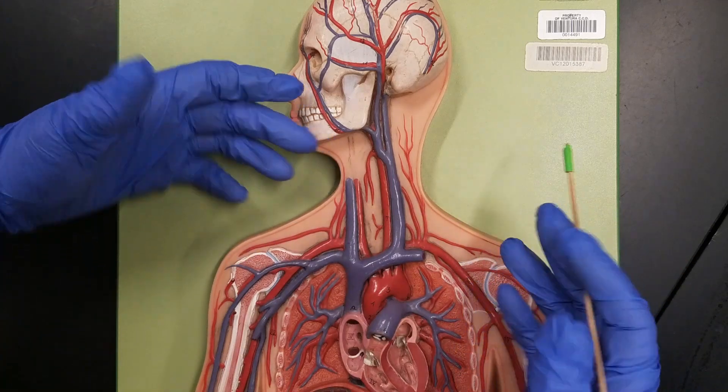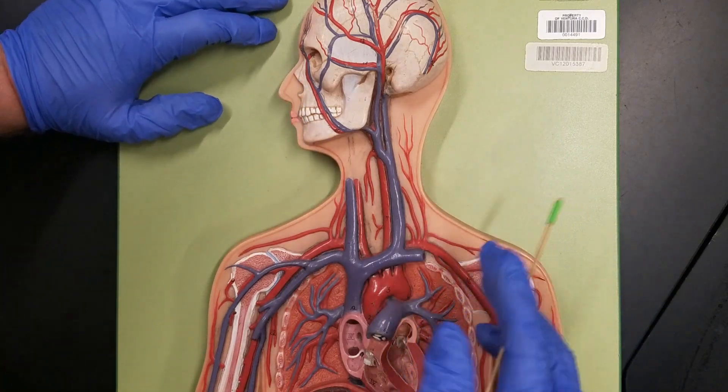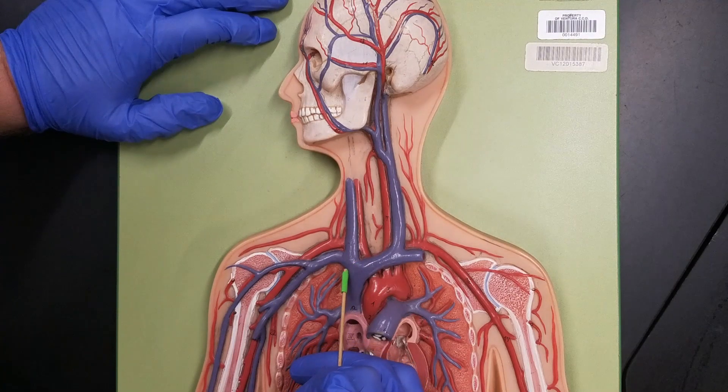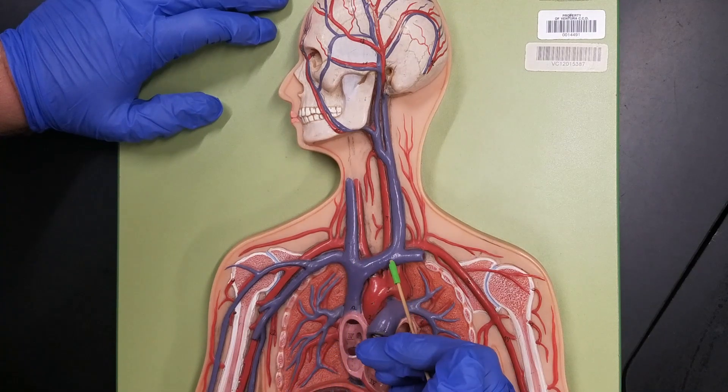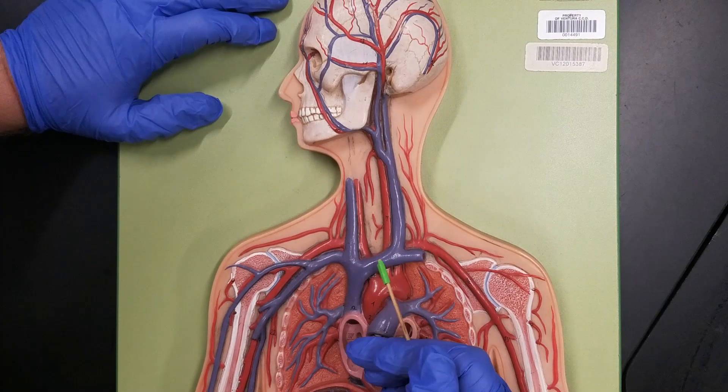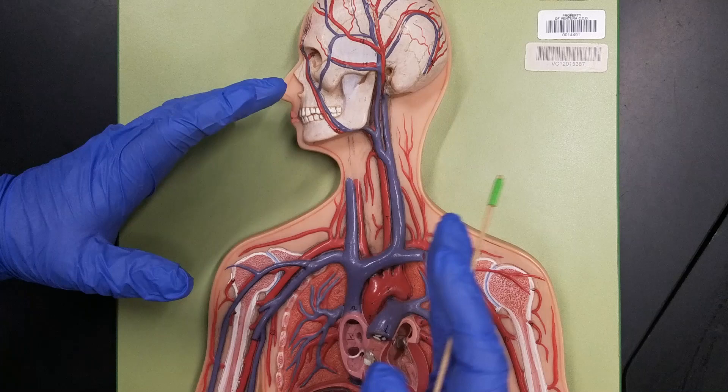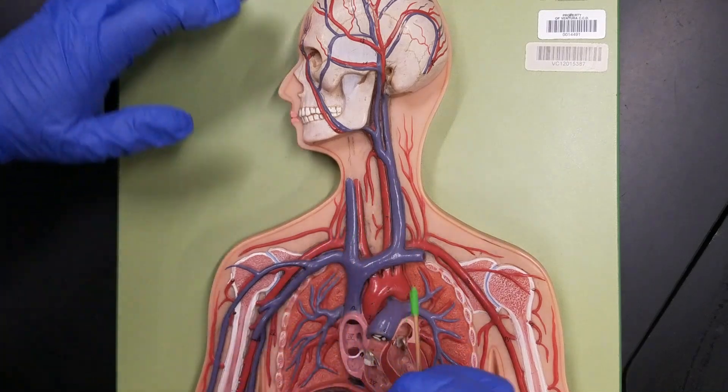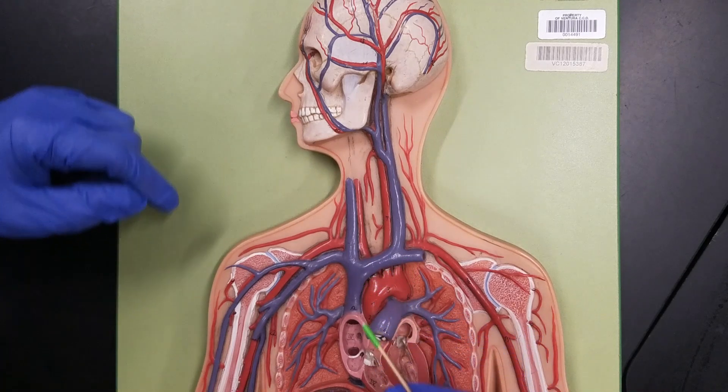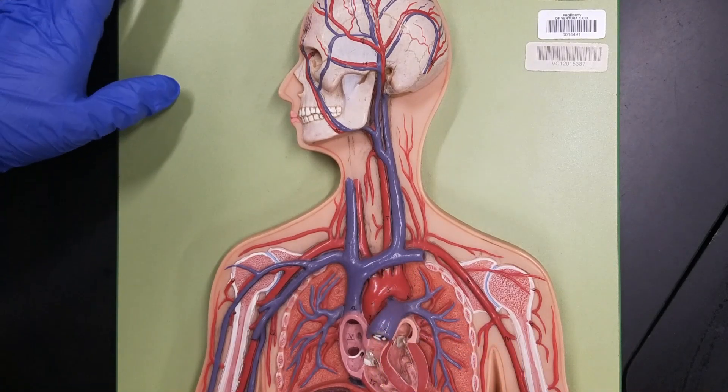One difference we can see between the left and right sides of the body is my right brachiocephalic vein is incredibly short, while the left brachiocephalic vein is a lot longer. Remember, these veins are draining blood back to the right side of the heart. That means our left brachiocephalic vein has to travel across the body if it's going to go into the right side of the heart.